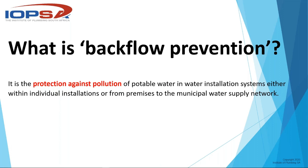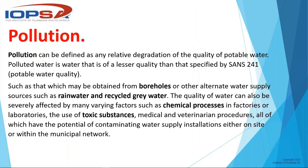Backflow prevention protects potable water in a water installation system, either within individual installations or from premises to the municipal water supply. Whether it be a house on a property or a complex, no water is allowed to flow back from an installation back into the municipal line. If we look at the definition of pollution, it can be defined as any relative degradation of the quality of potable water. Polluted water is water that is of a lesser quality than that specified by SANS 251.